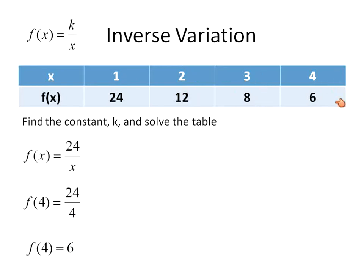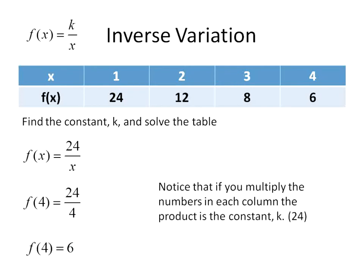1 and 24, 2 and 12, 3 and 8, 4 and 6. You might notice that these are all factors of 24. That's what inverse variation looks like. One side is increasing: 1, 2, 3, 4. The other one is decreasing: 24, 12, 8, 6.